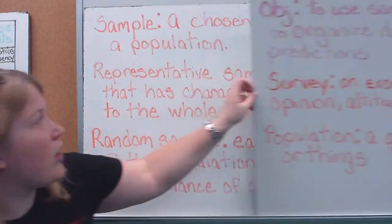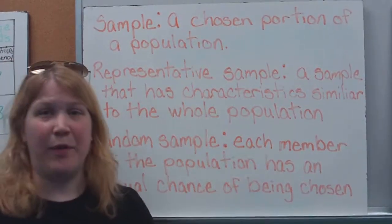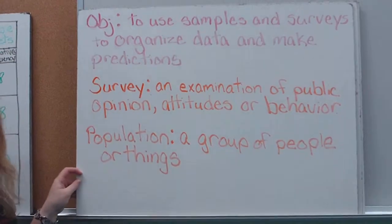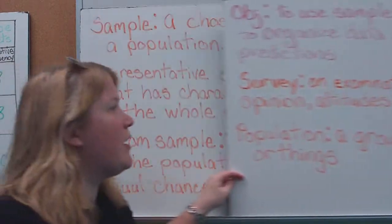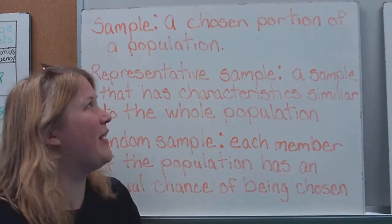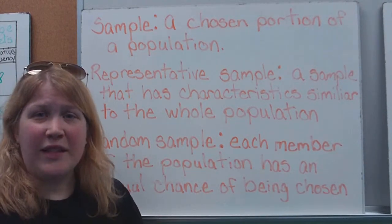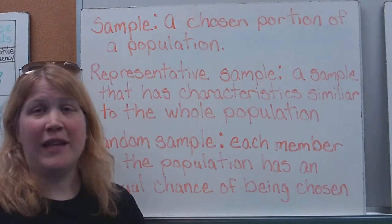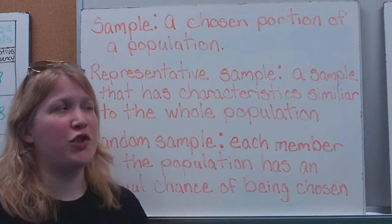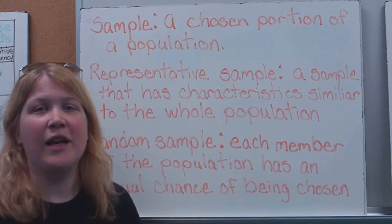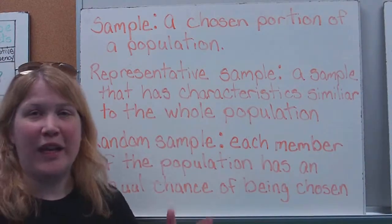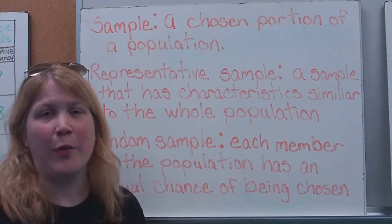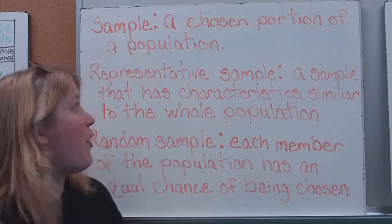From that population, what we're going to look at is just simply a sample. Obviously, if we wanted to get some information, asking the entire population would be impossible. There's just too many people. That's too much data. So instead, we're going to use what we would call a sample, meaning a chosen section from the population, just a small part that we can use for our purposes to find out what it is that we want to know.